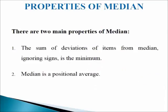Properties of median. There are two main important properties of median. First, the sum of deviations of items from median, ignoring signs, is the minimum. For example,